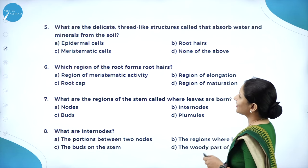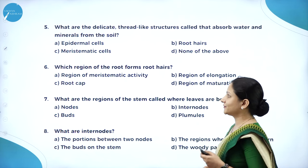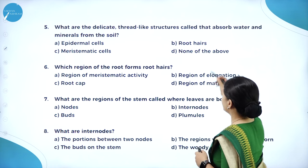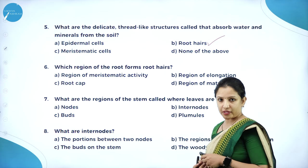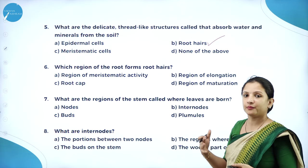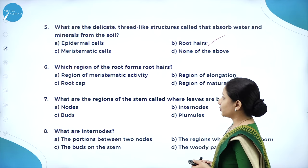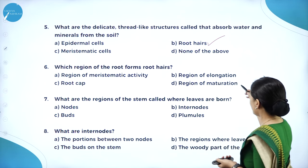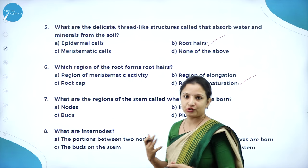What are the delicate thread-like structures called that absorb water and minerals from the soil? They are called root hairs, which arise from the region of maturation and give extra support to the roots in terms of absorption of nutrients, minerals, and water. Which region of the root forms root hairs? It is the region of maturation — that is the last region where root hairs usually arise.